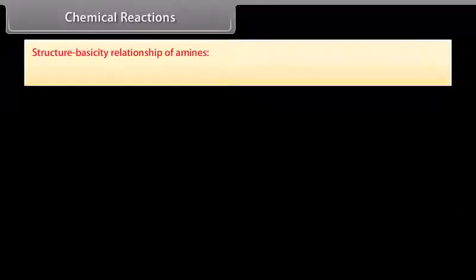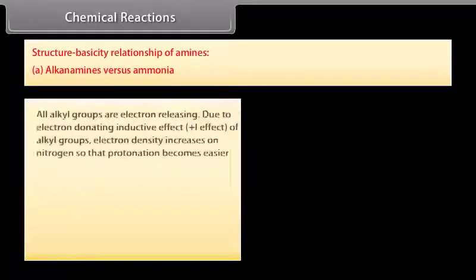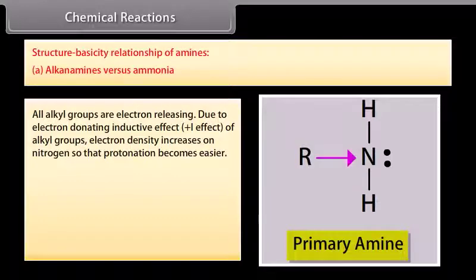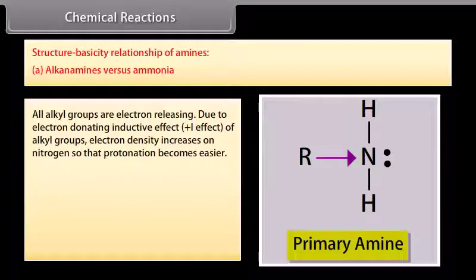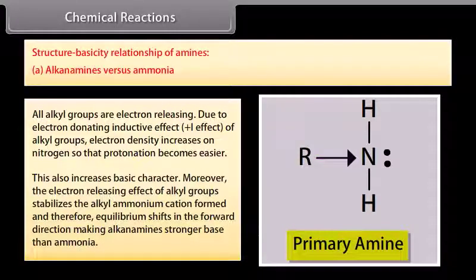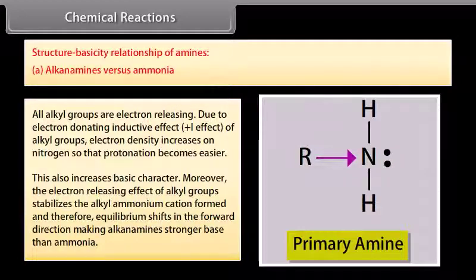Structure-basicity relationship of amines — alkylamines vs. ammonia: All alkyl groups are electron-releasing. Due to the electron-donating inductive effect (positive I effect) of alkyl groups, electron density increases on nitrogen so that protonation becomes easier, increasing basic character. Moreover, the electron-releasing effect of alkyl groups stabilizes the alkylammonium cation formed, and therefore equilibrium shifts in the forward direction making alkylamines stronger bases than ammonia.